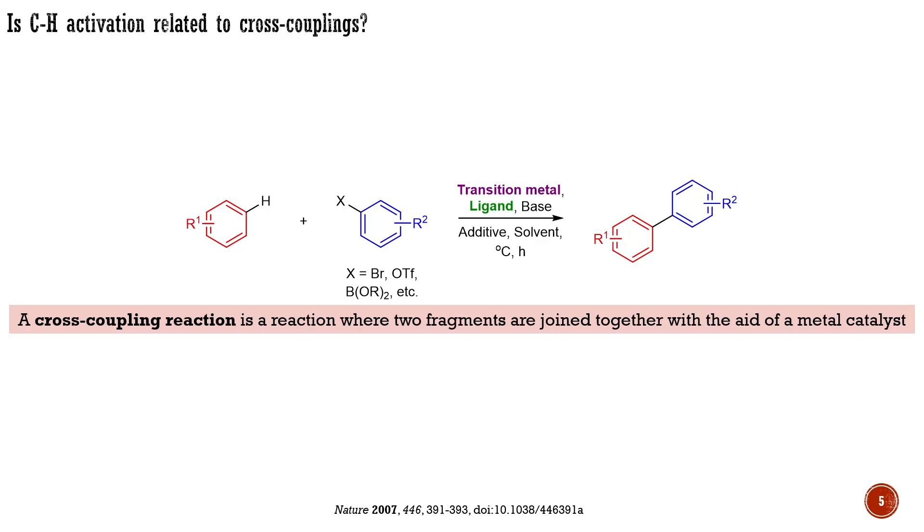Here, it is not important what type of bonds are being activated in the process of joining two fragments together. In other words, C-H activations can be considered a specific case of cross-couplings, where at least one C-H bond is activated in the process of constructing a new bond.